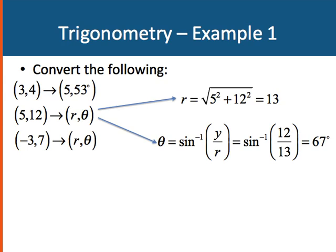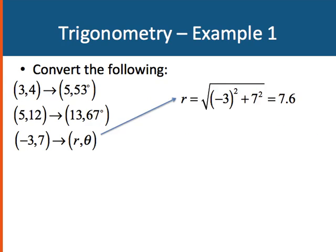How about this last one? (-3, 7). Well, r is simple. It's the same. We use the Pythagorean theorem. 3 squared, minus 3 squared plus 7 squared is equal to 7.6. But we can't just blindly plug into our trigonometric functions anymore, because we're no longer in the first quadrant of our coordinate system.